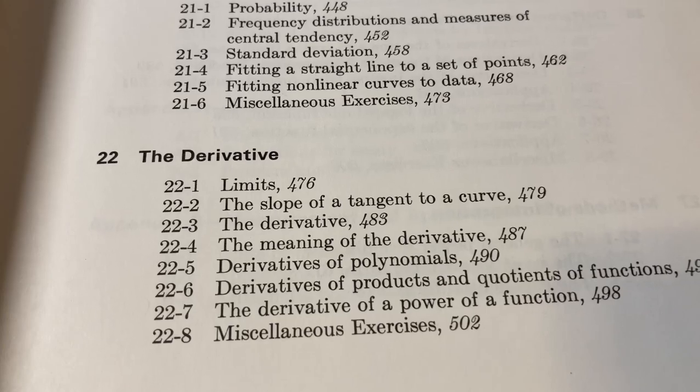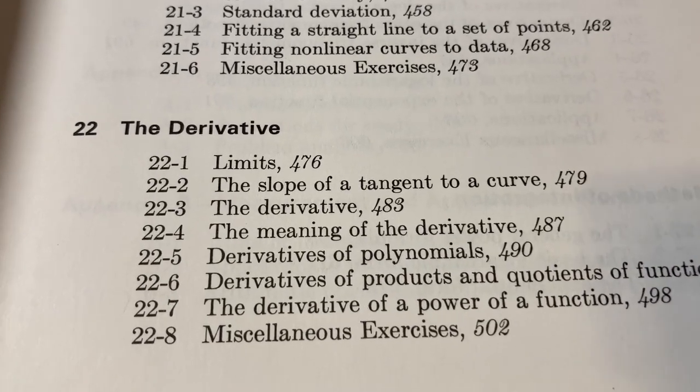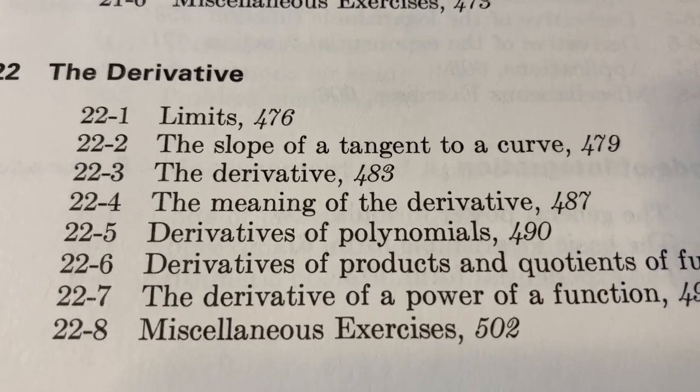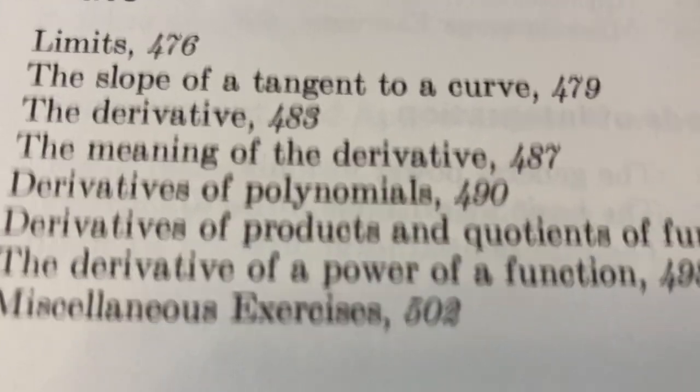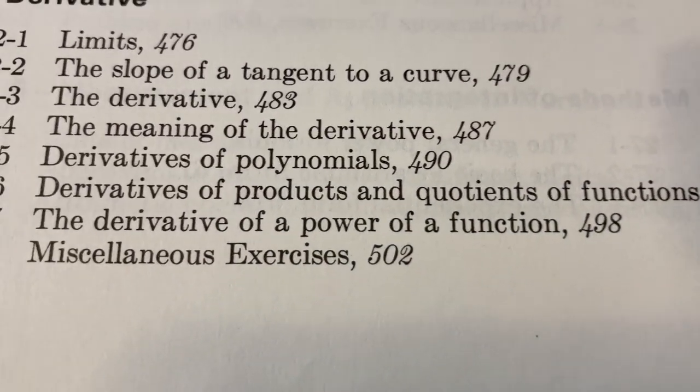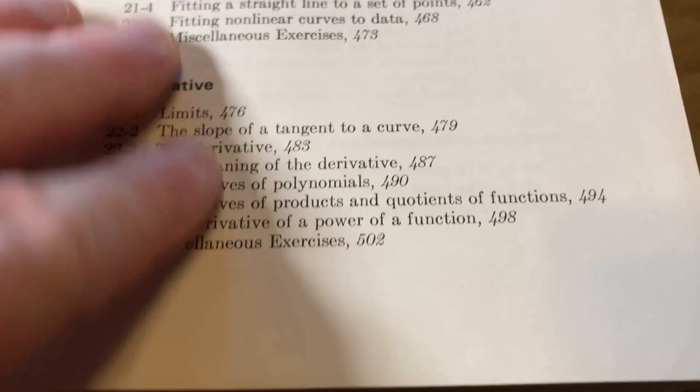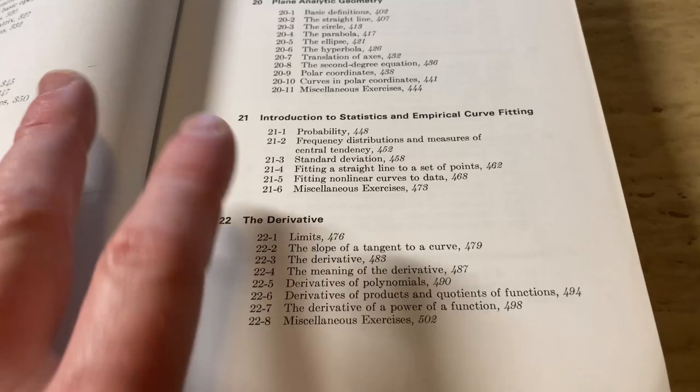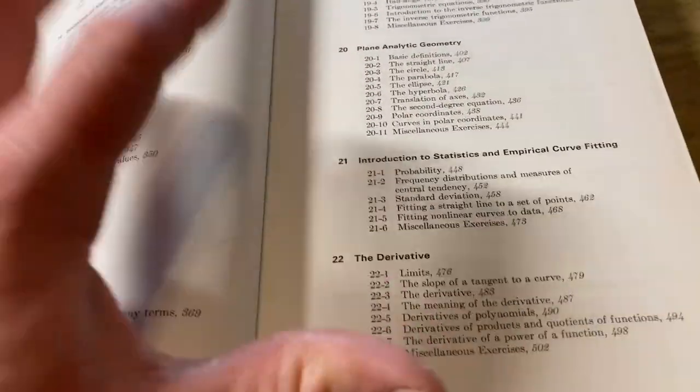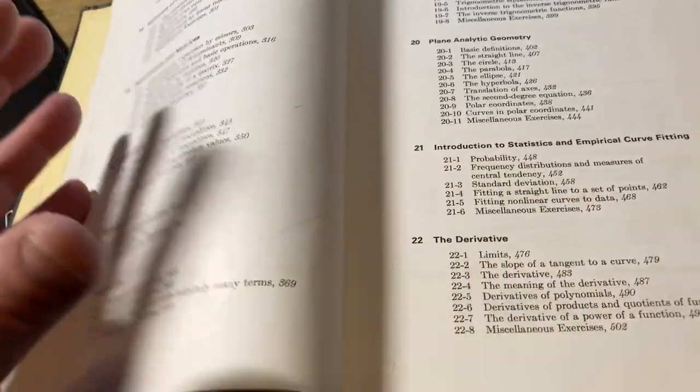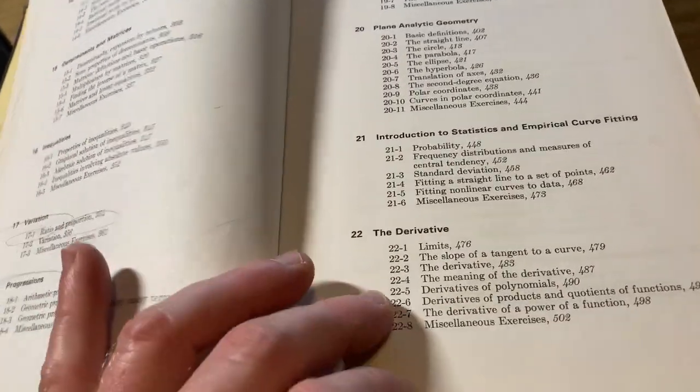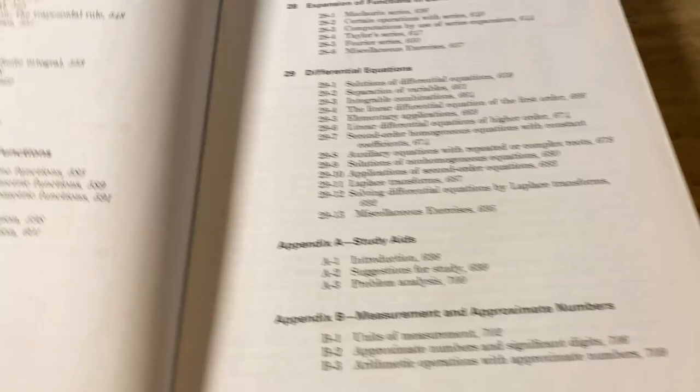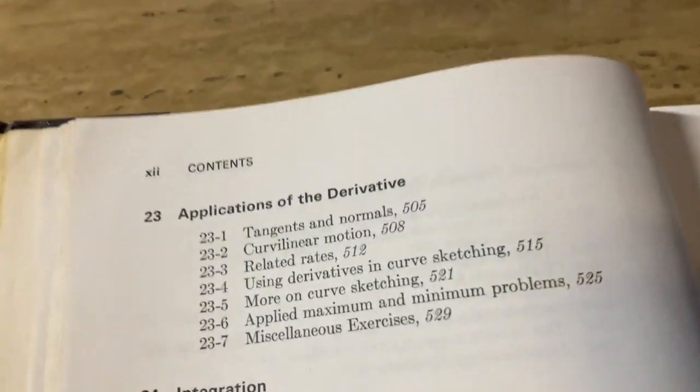We've got limits, the slope of a tangent to a curve, the derivative, the meaning of the derivative, derivatives of polynomials, derivatives of products and quotients of functions, the derivative of power functions. So this is great. This is really good stuff. So if you were to take a course like business calculus, you would do some of these things, but you wouldn't do as much. So there are business calculus books, which are great beginner books for calculus. And this is a great beginner book for someone who wants to learn calculus.